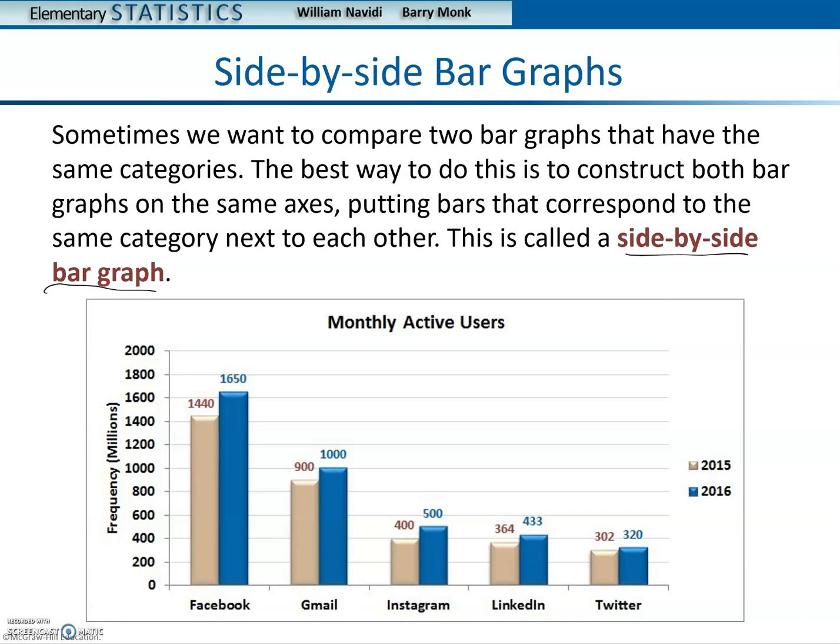Notice that we have a title, Monthly Active Users. Down here on the x-axis is Facebook, Gmail, Instagram, LinkedIn, Twitter. And we have the dates, 2015, 2016.